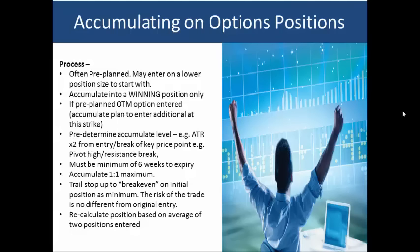We pre-determine an accumulation level. For example, we may choose 2 to 8R from our entry or the break of the price point. We may look at a pivot high, a break of that, or a resistance break, and it must be a minimum of six weeks to expiry.